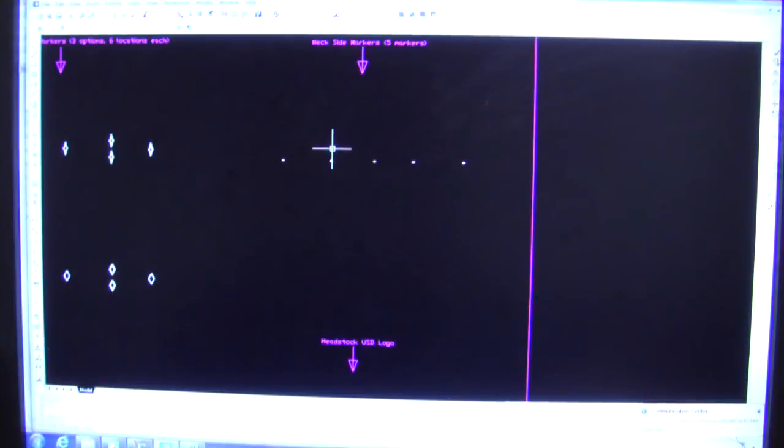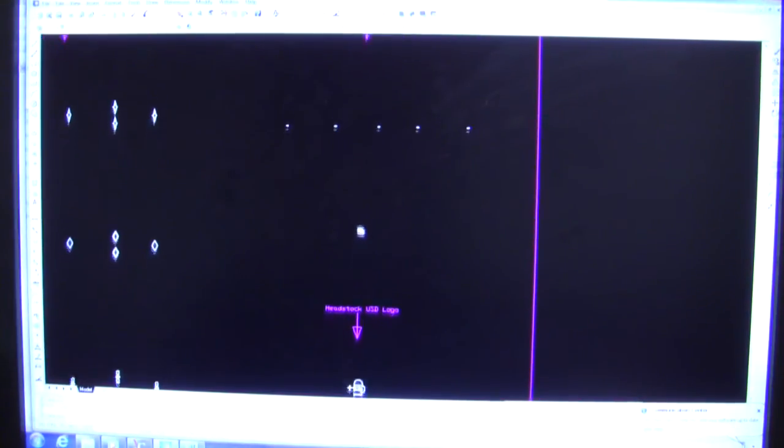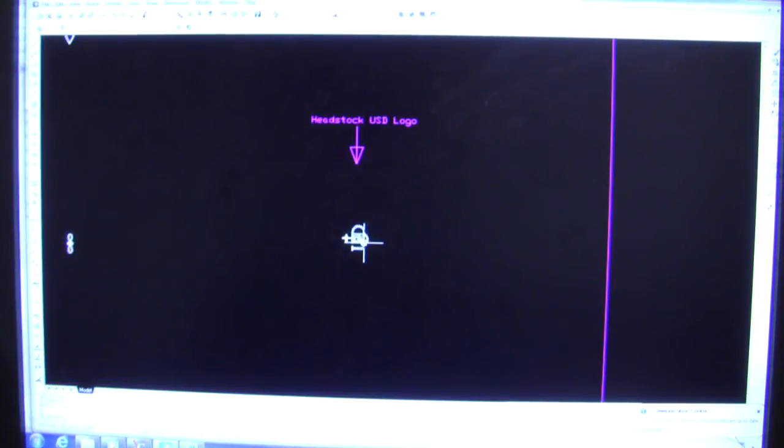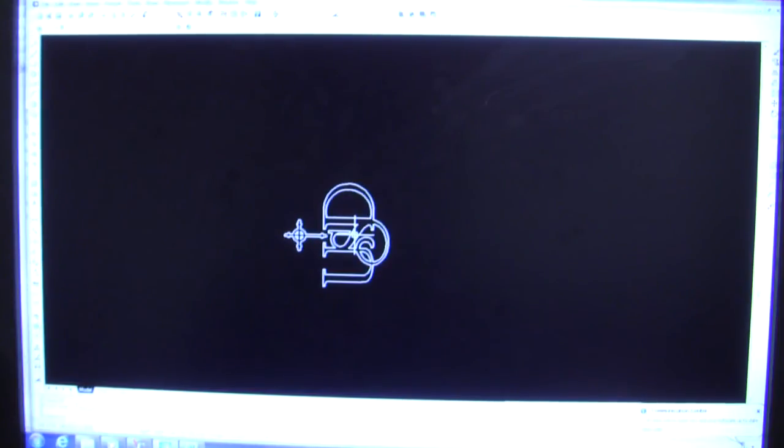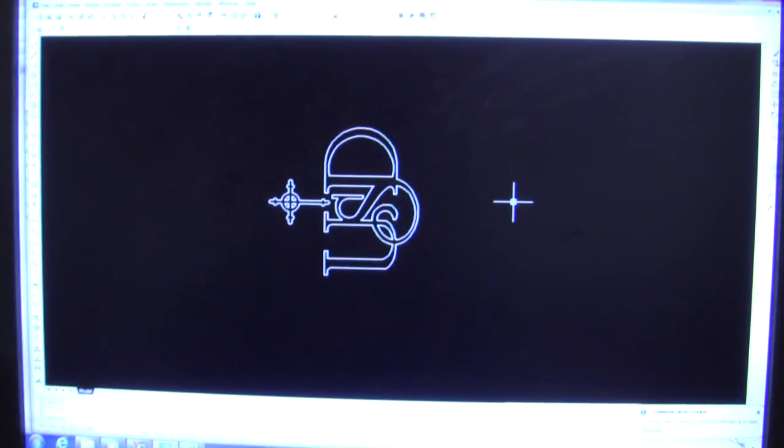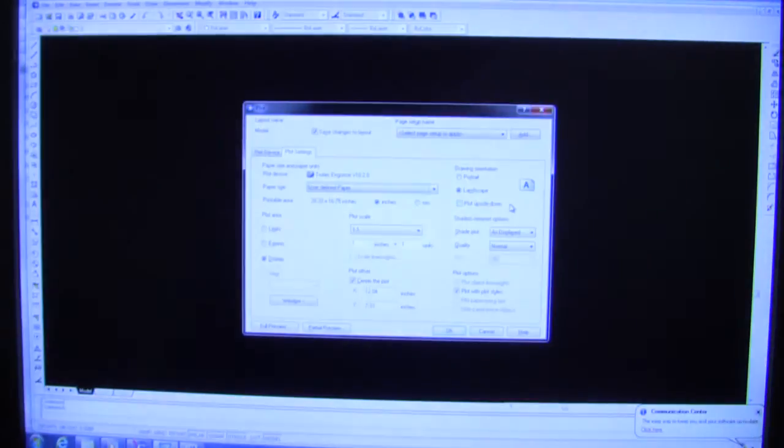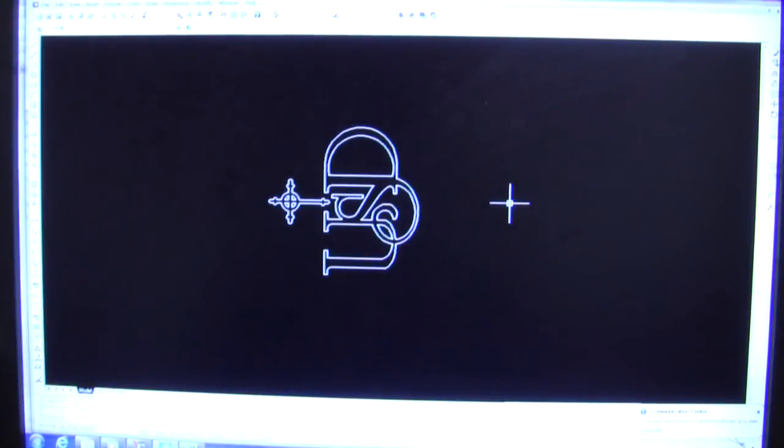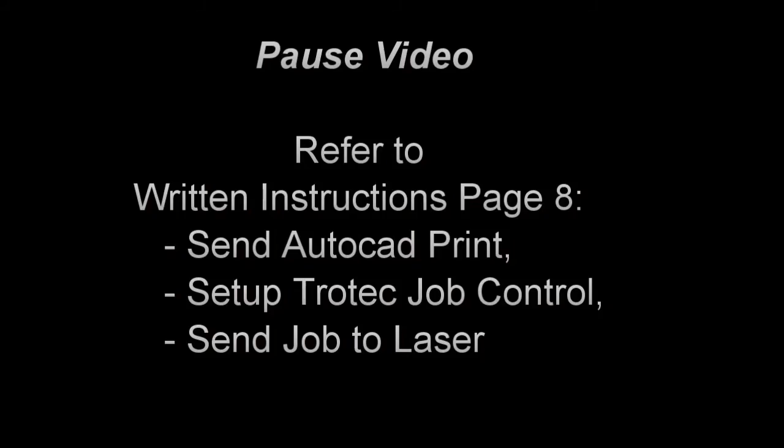Back in AutoCAD, we're going to re-zoom to the lower right part of the screen. Here's that USD logo. Zoom for that, taking up the screen but nothing else. Go to the print window. Once again, you can pause the video here and page eight will talk about how to set that up in Trotec.